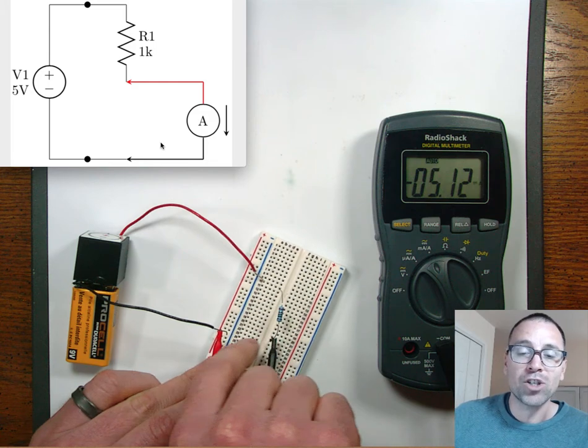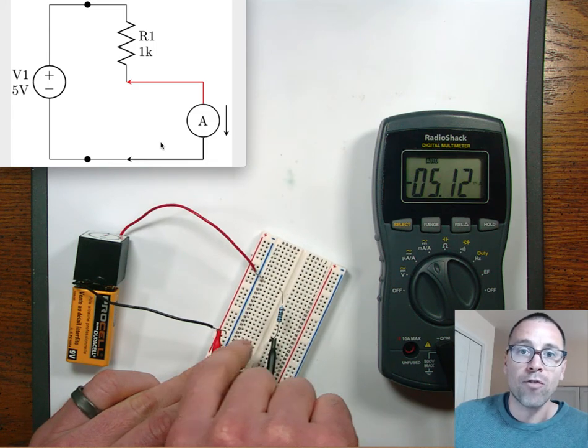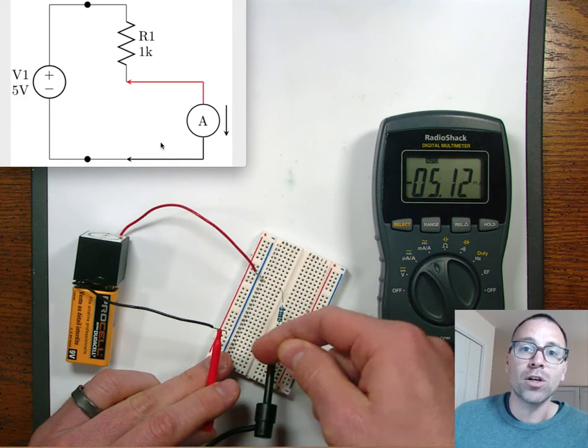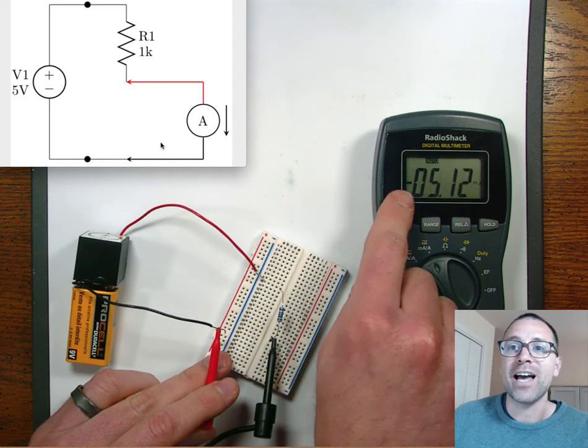So, the reference direction of my current measurement is going from the red to the black. But the actual current in the circuit is going opposite. And that's why we see that negative there.